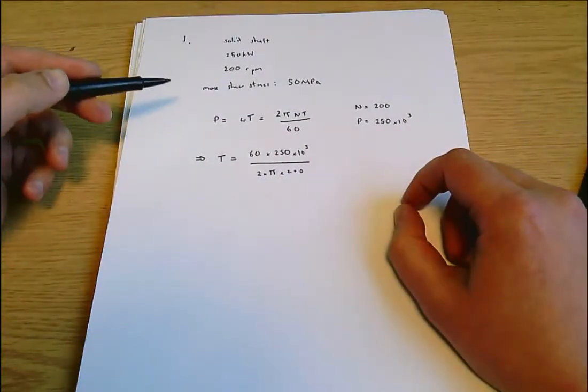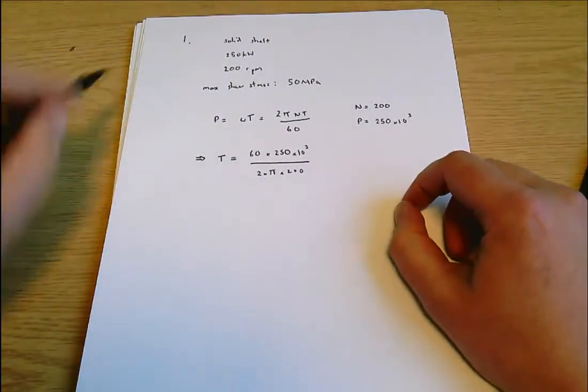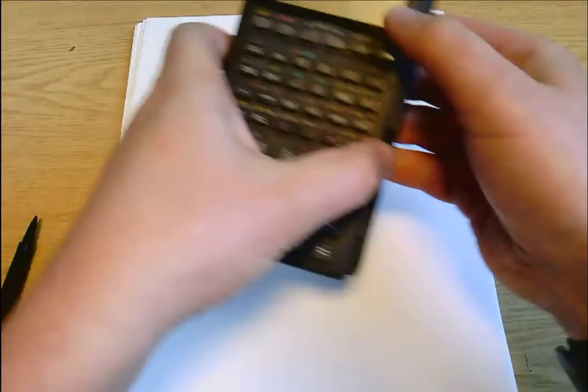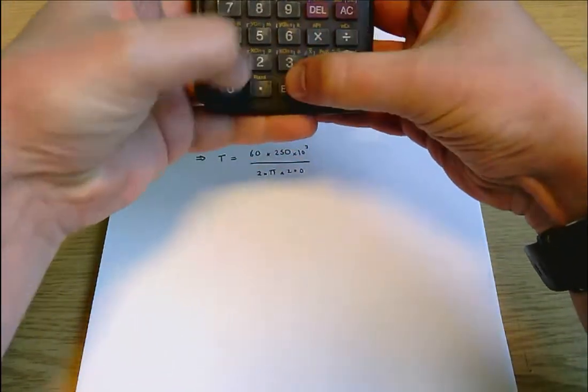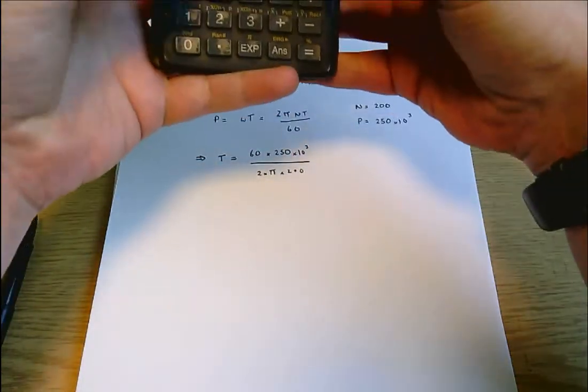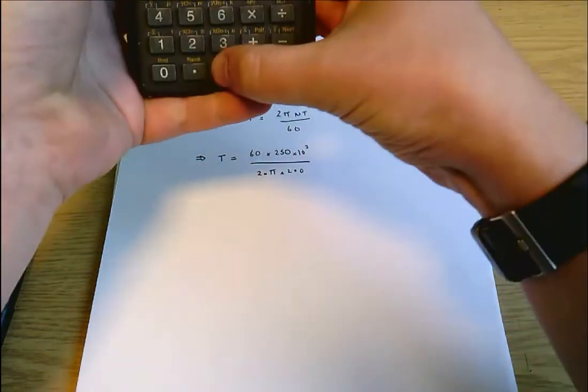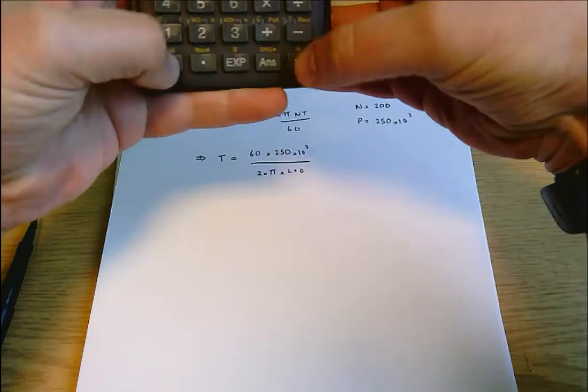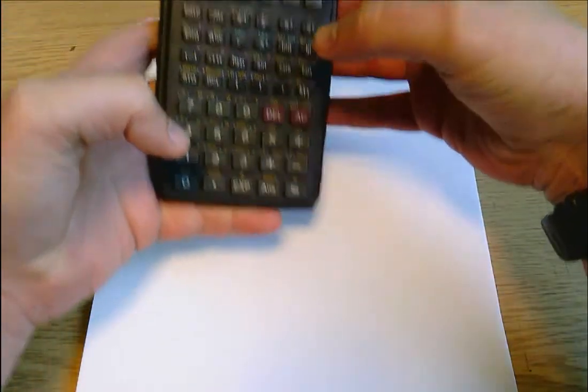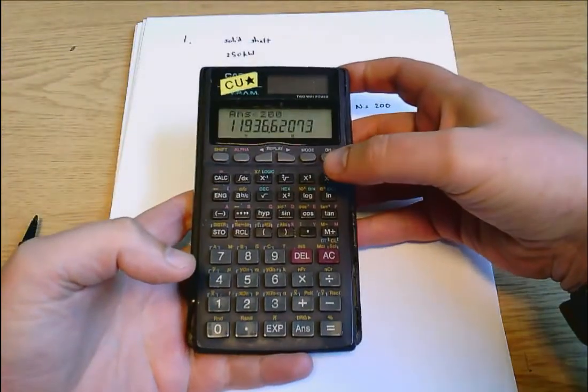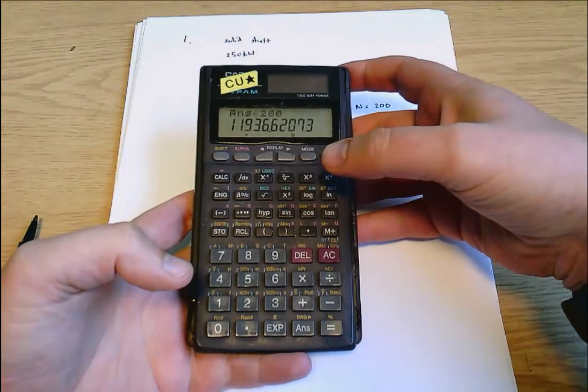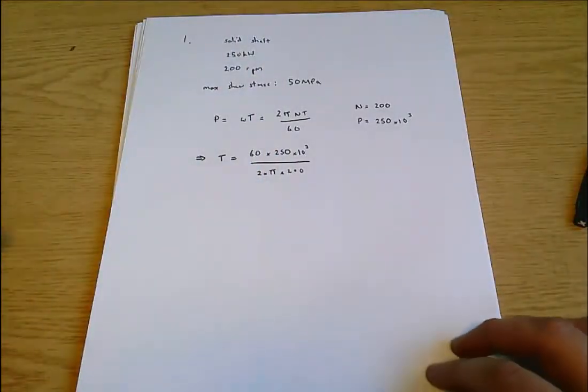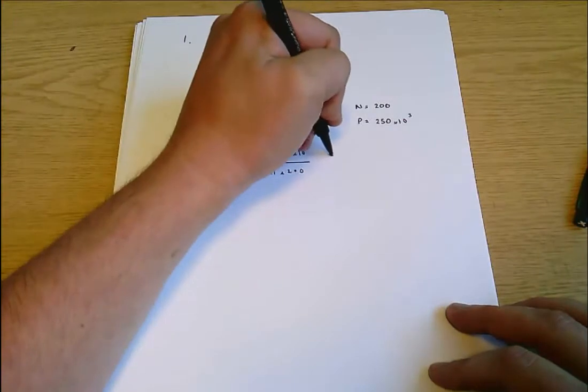t equals 60 times 250 times 10 to the 3 all divided by 2 times π times 200. That seems fine so I'll just put that into my calculator and I get 11.9 kNm.